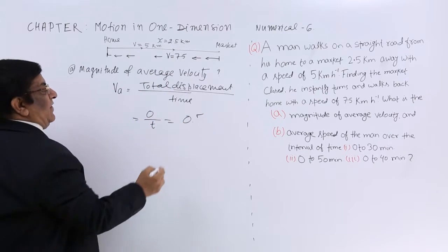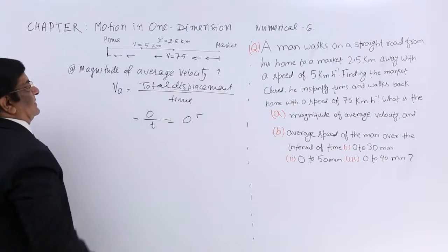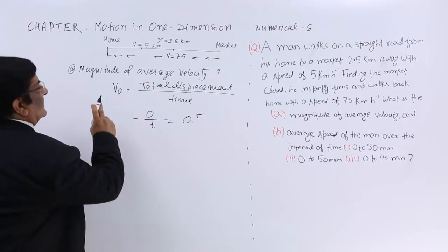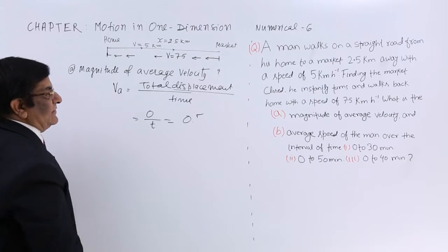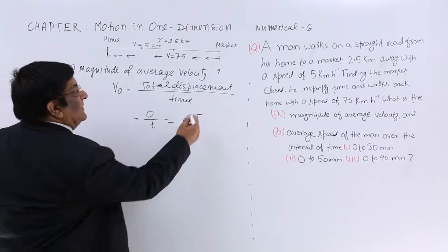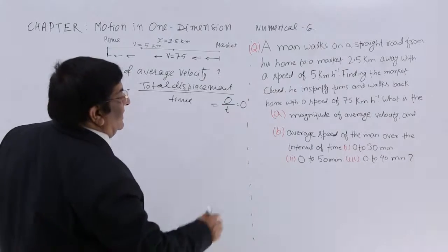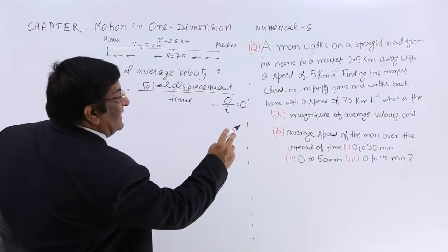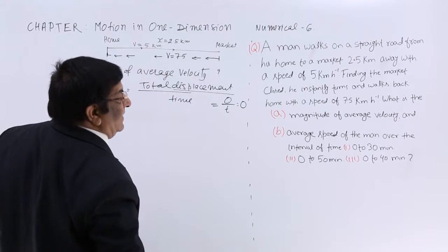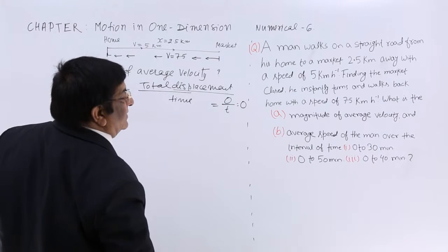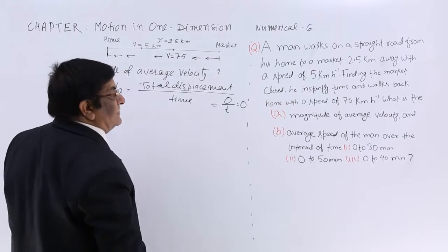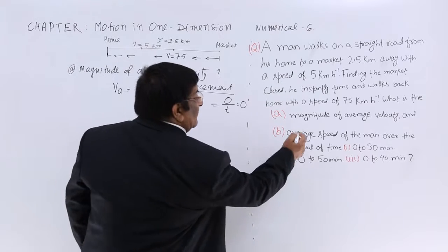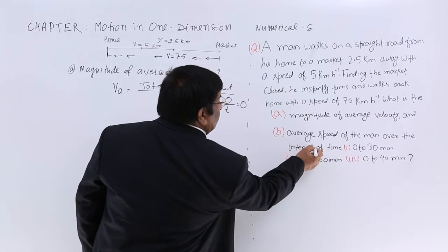So what is the average velocity? It is 0. That is the first part. Now go for the second part: average speed of the man over intervals of time.